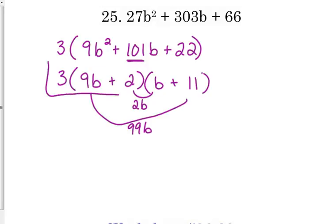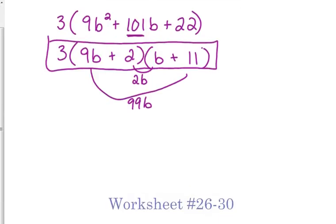So don't forget, always, always, always check for a GCF first. And then factor, if possible, the expression. So 26 through 30, they all have GCFs, and then you have to factor with a composite A after that point.